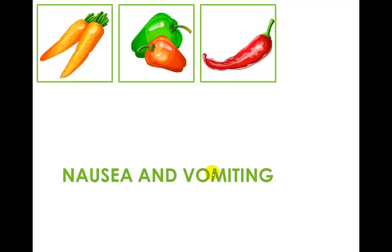Anti-emetics typically can be given by numerous routes. They can be given PO, though not always the most effective. There is one type of medication that can be given under the tongue as an oral disintegrating tablet — ODT. They can also be given IM, IV, or as suppositories. The route will depend on the severity of the patient's nausea and vomiting.